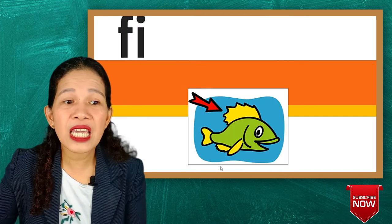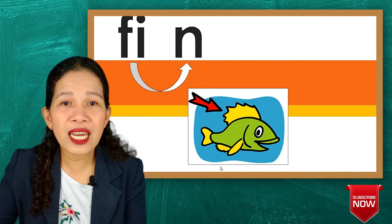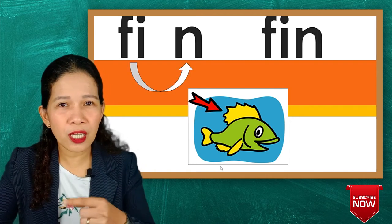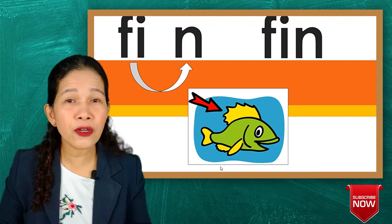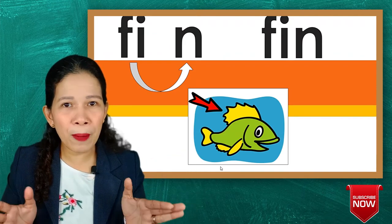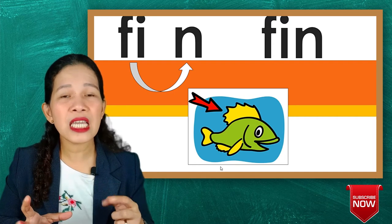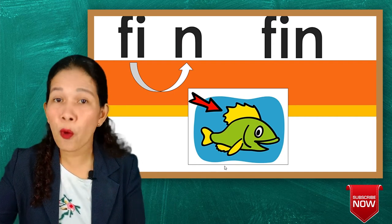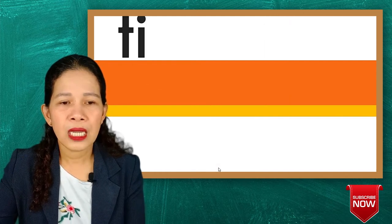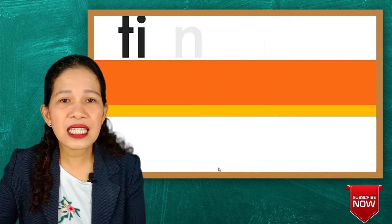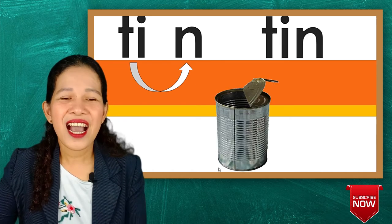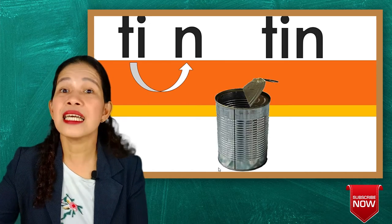Okay, next is fin. It's a part of the fish that you would see up there or on the lower part of the fish, which helps the fish to swim. The tail and the fins enable the fish to swim well in water. So that's fin. Next is tin — another word for can is tin.